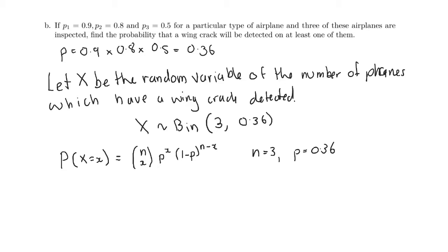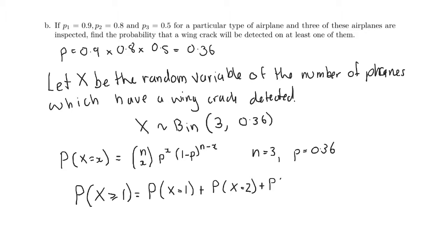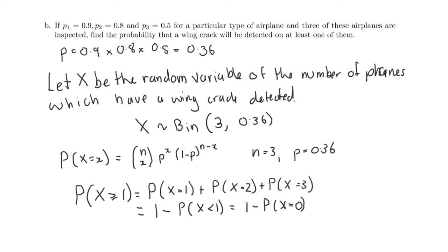We want the probability that at least one plane has a crack, so P(X ≥ 1). Rather than summing all those terms, we use the complement: P(X ≥ 1) = 1 − P(X = 0), since 'at least one' means it is definitely not zero.